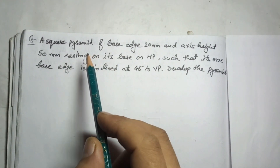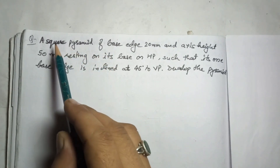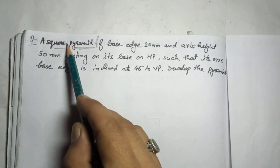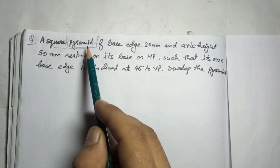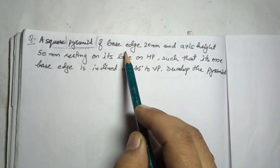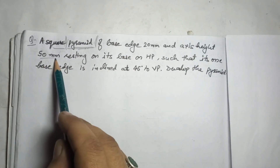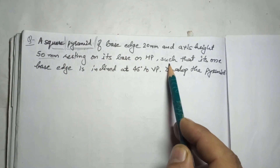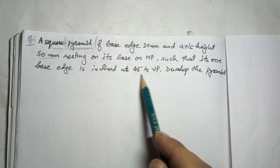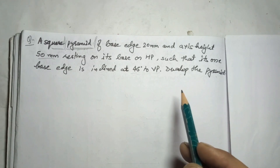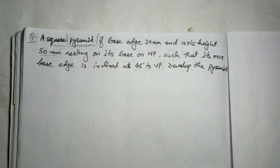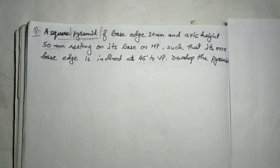First of all, how will we identify which method to apply? The question says a square pyramid — so the type of solid is pyramid, and for a pyramid we use the radial line method. The question states: a square pyramid of base edge 20mm and axis height 50mm, resting on its base on HP, such that its one base edge is inclined at 45° to VP. Develop the pyramid.